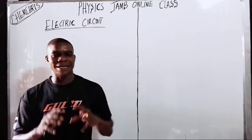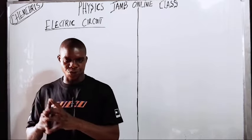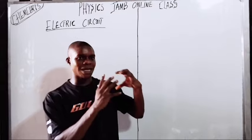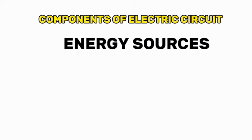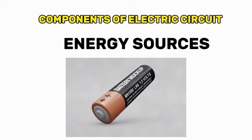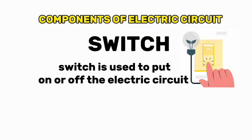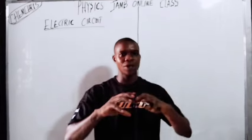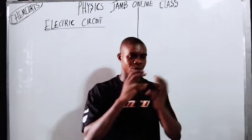Now before you can understand electric circuits, let's understand the key components. I'm going to run through them one by one. The first component of an electrical circuit is called the energy source. The energy source can either be a battery, a solar panel, or a generator. Number two is the switch. A switch is used to put on or off the circuit — it controls the current.